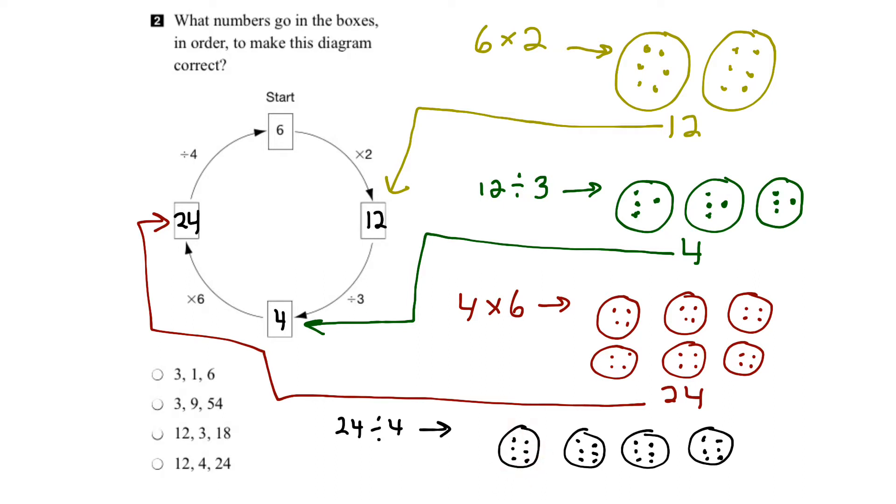So if I break 24 up into 4 groups, how many are in each group? There are 1, 2, 3, 4, 5, 6 in each group, which is the right answer. So we know that we are correct.